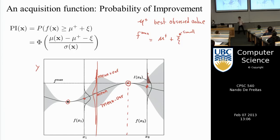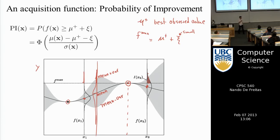Using the cumulative area under the Gaussian at any point seems to be a good heuristic: points that are higher or have high variance will be preferred. So x2 is preferred to x1, and x3 would also be preferred to x1. The reason we add a small epsilon is to handle the case when the Gaussian is centered exactly at the best point, where the tail probability would always be a half.